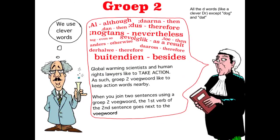I like to remember Groep 2 as thinking of the words that are used by doctors and scientists and lawyers — really clever people who use long words like nevertheless, besides, therefore, as a result, otherwise, although. You can also remember Groep 2 as all of the D words — like a clever doctor — except doch, because children like to play with dogs, and dat, which ends with 'at', so it goes in Groep 3. But more about that later.